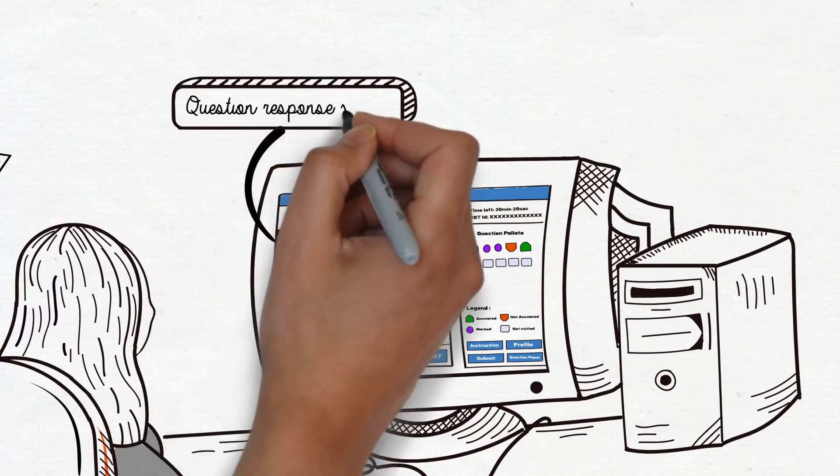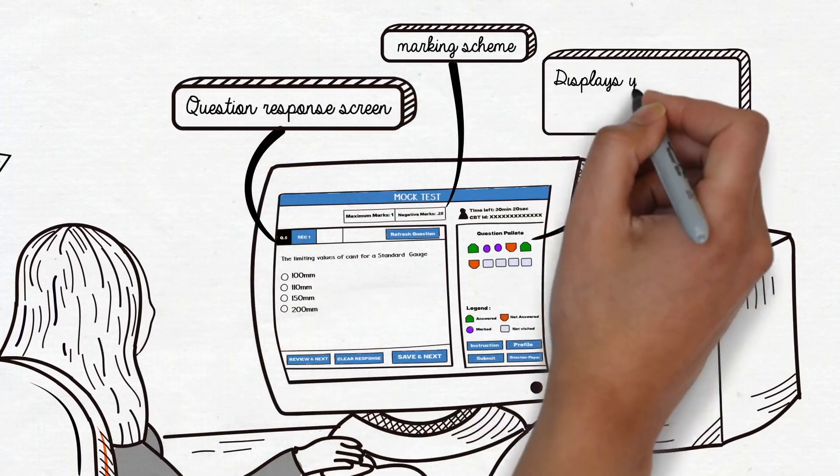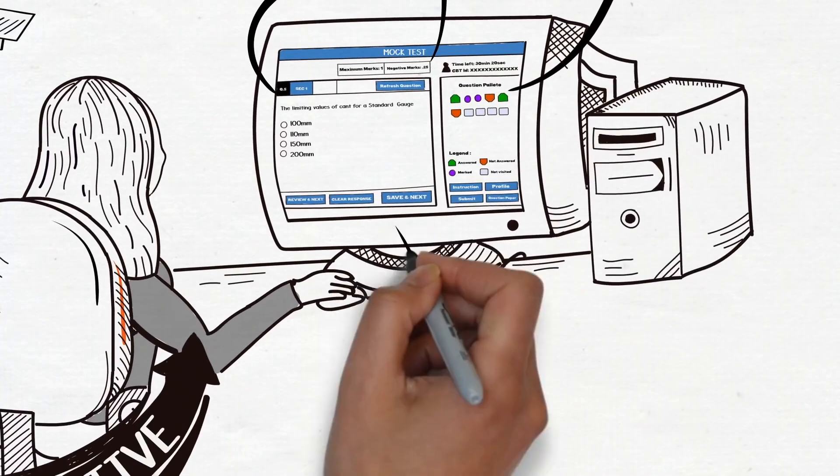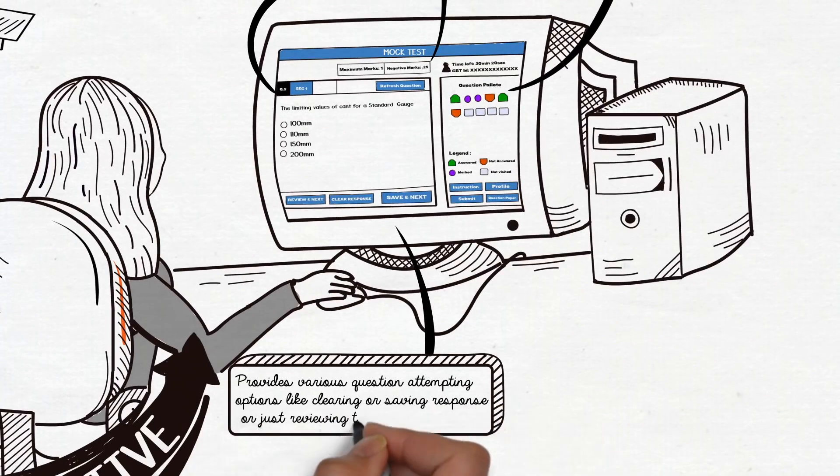It contains a question response screen for attempting questions, marking scheme. It also displays your question attempting information. And the bottom part of the screen provides various question attempting options like clearing or saving response or just reviewing the question.